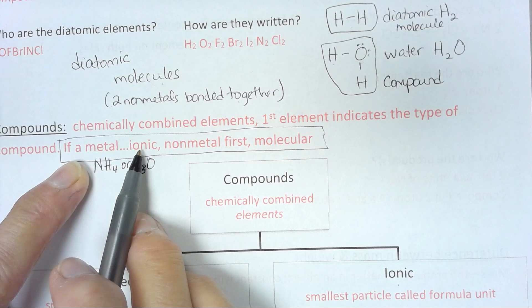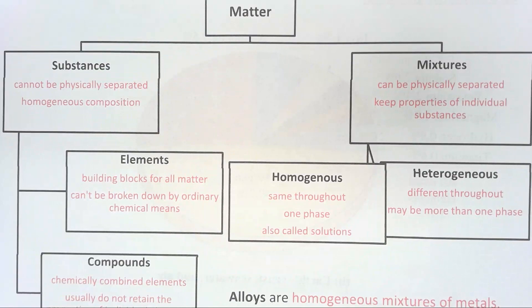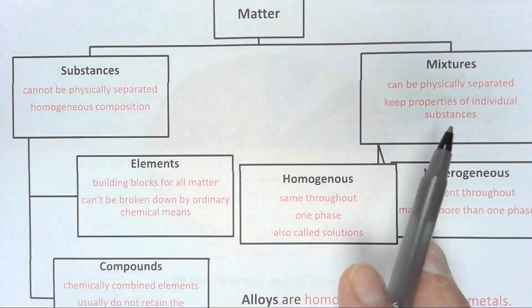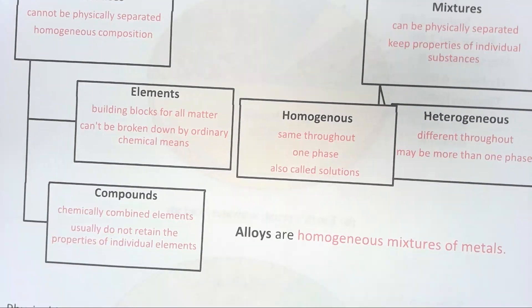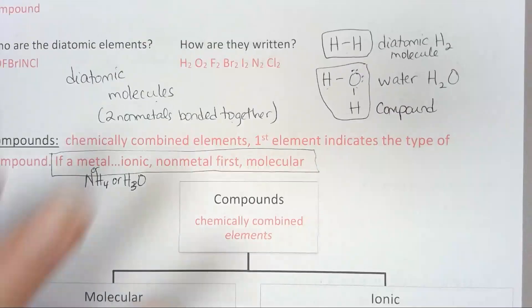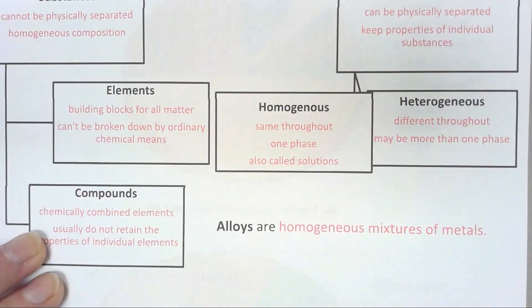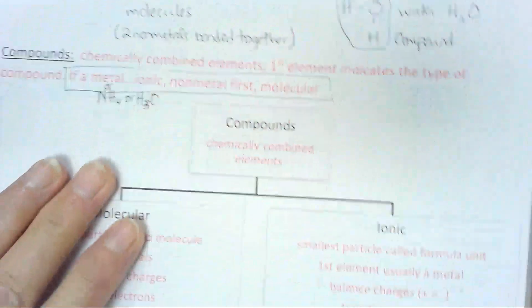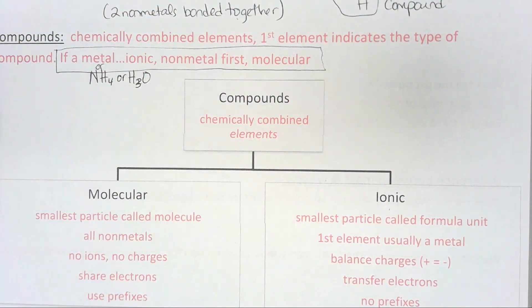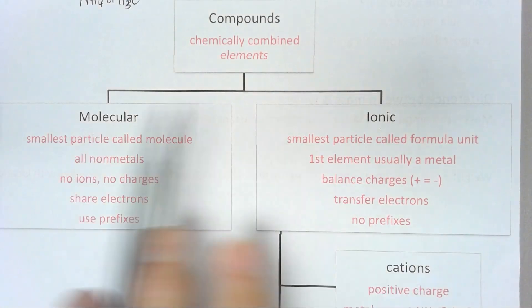Let's talk about the two different types of compounds. Compounds are chemically combined elements. There was another shorter video that had matter, and then we classified matter as substances or mixtures. We further classified substances as elements and compounds. Now we're breaking down elements, and we're talking about compounds. So I could take this right here and expand it to this flow chart.